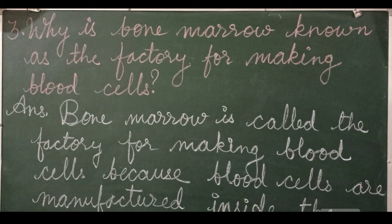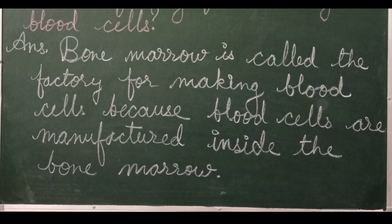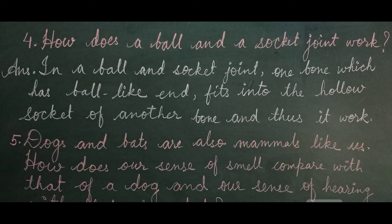Question 3: Why is bone marrow known as the factory for making blood cells? Answer: Bone marrow is called the factory for making blood cells because blood cells are manufactured inside the bone marrow. Question 4: How does a ball and socket joint work? Answer: In a ball and socket joint, one bone which has a ball-like end fits into the hollow socket of another bone, and thus it works.